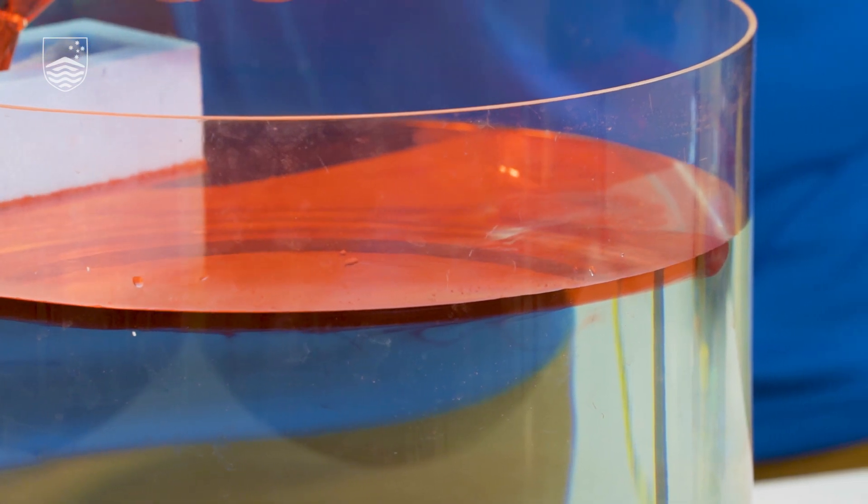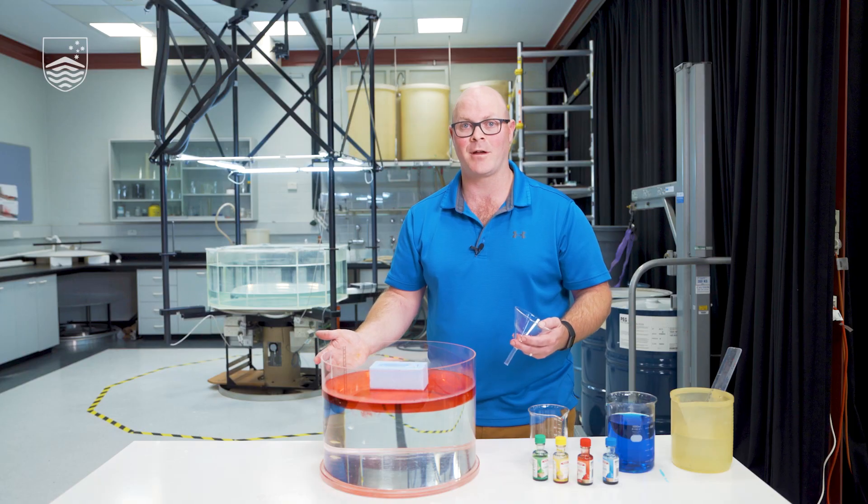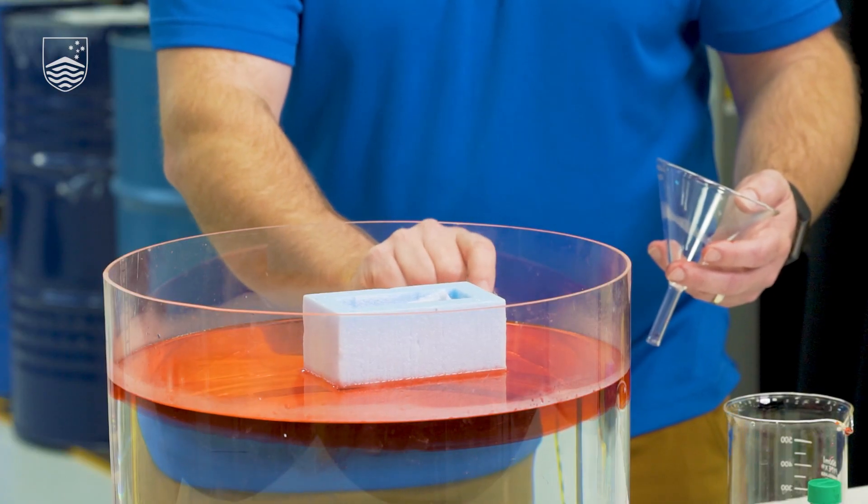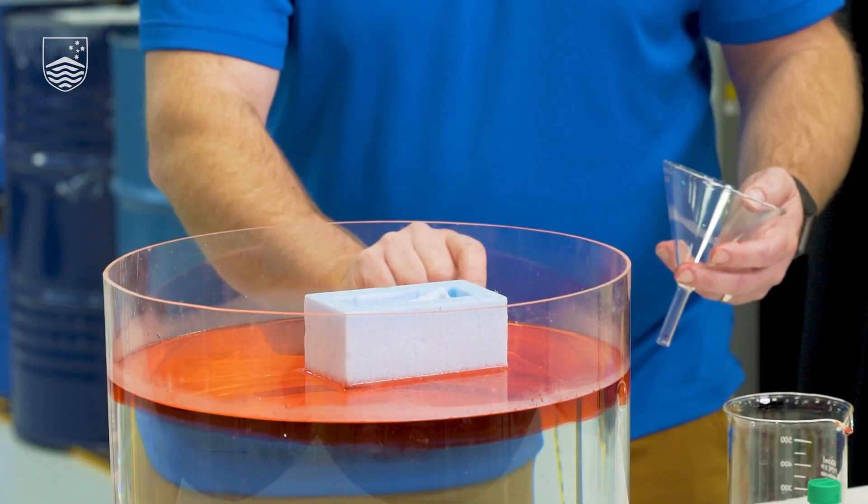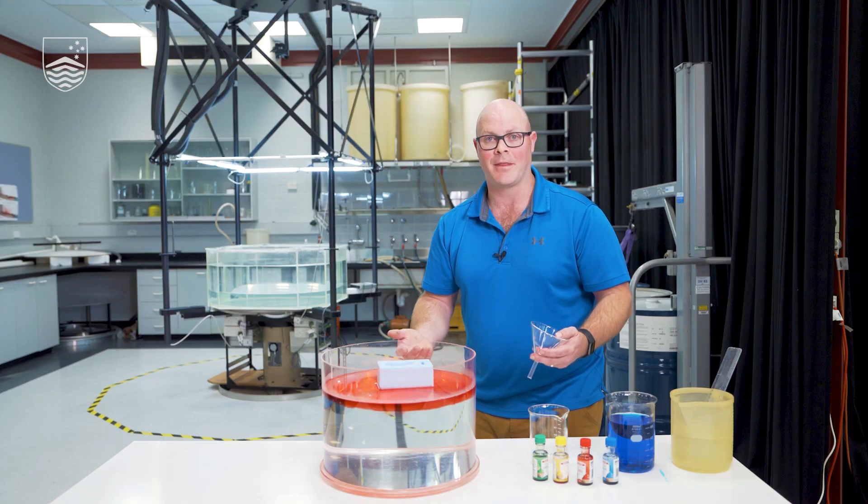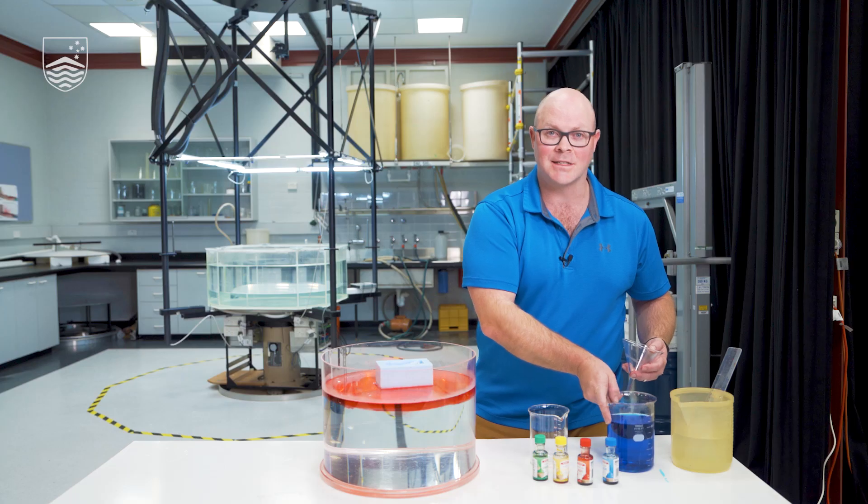OK, so we've just poured the warm, the red warm water in, and you can see that that's formed a layer of warm water that's sitting at the surface. It's at the surface because it's less dense than the water underneath it. And that's because it's warm and the density of water is a strong function of its temperature.